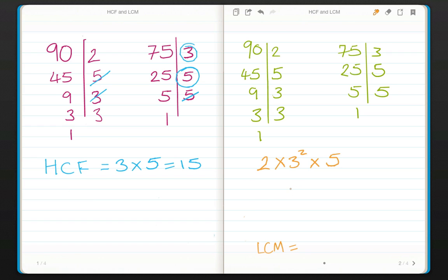And 75 can be written as 3 times 5 times 5. We're just going to write that as 3 times 5 squared.